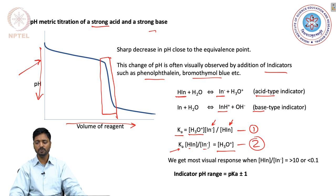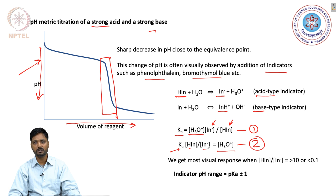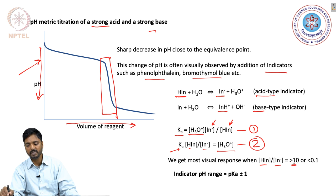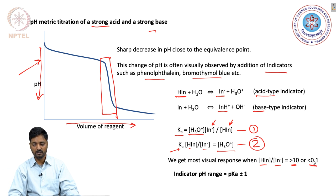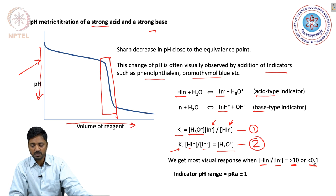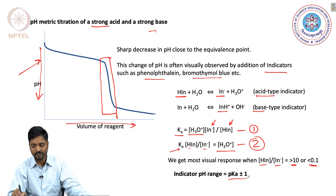It is important to remember that for an indicator to show the maximum visual response, we require the concentration of the neutral form divided by the anionic form to be either greater than 10 or less than 0.1. So the best pH range for an indicator would be its pK value plus or minus 1.